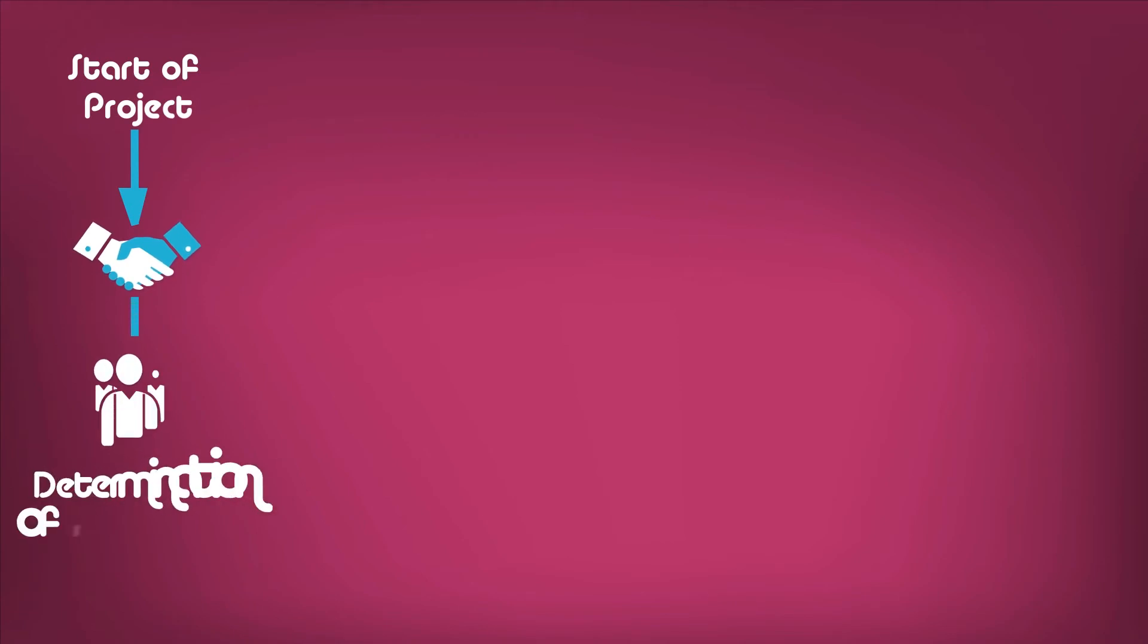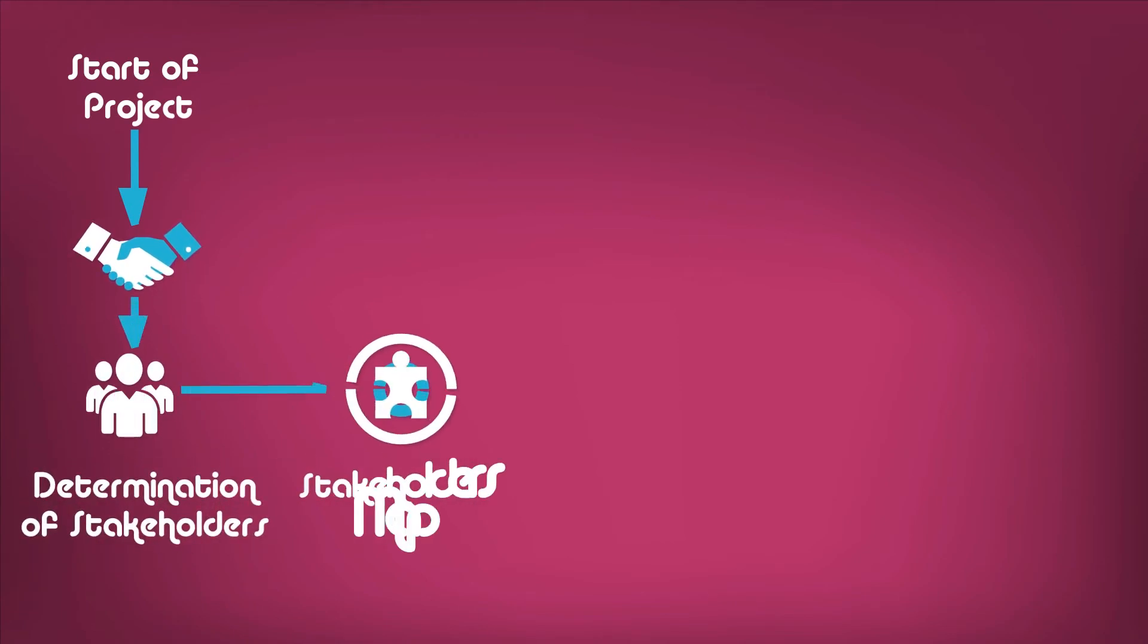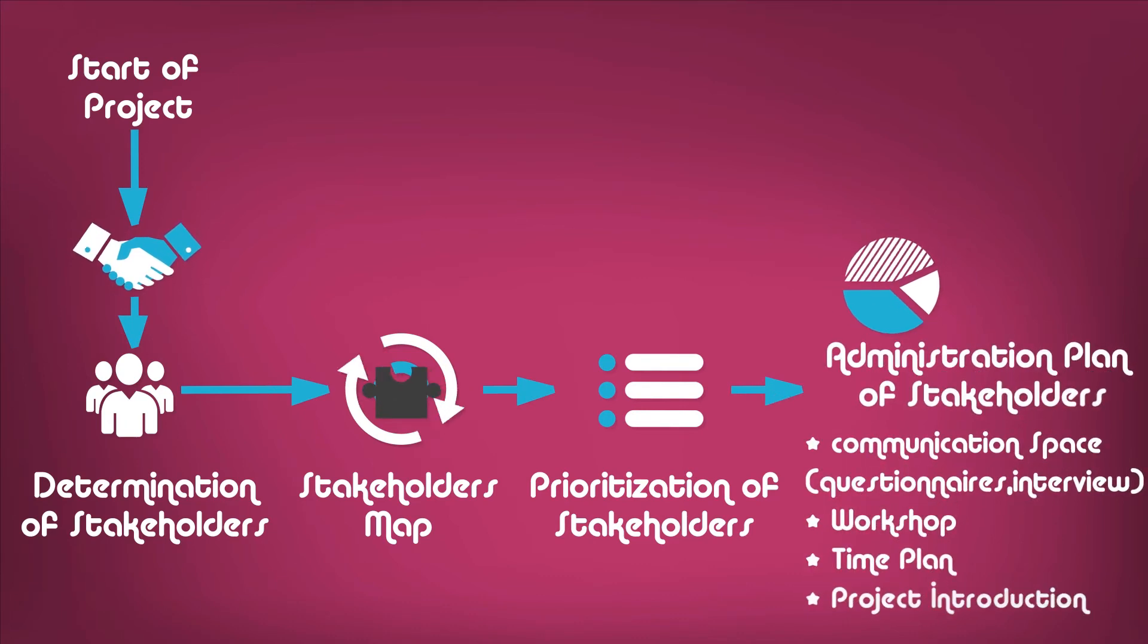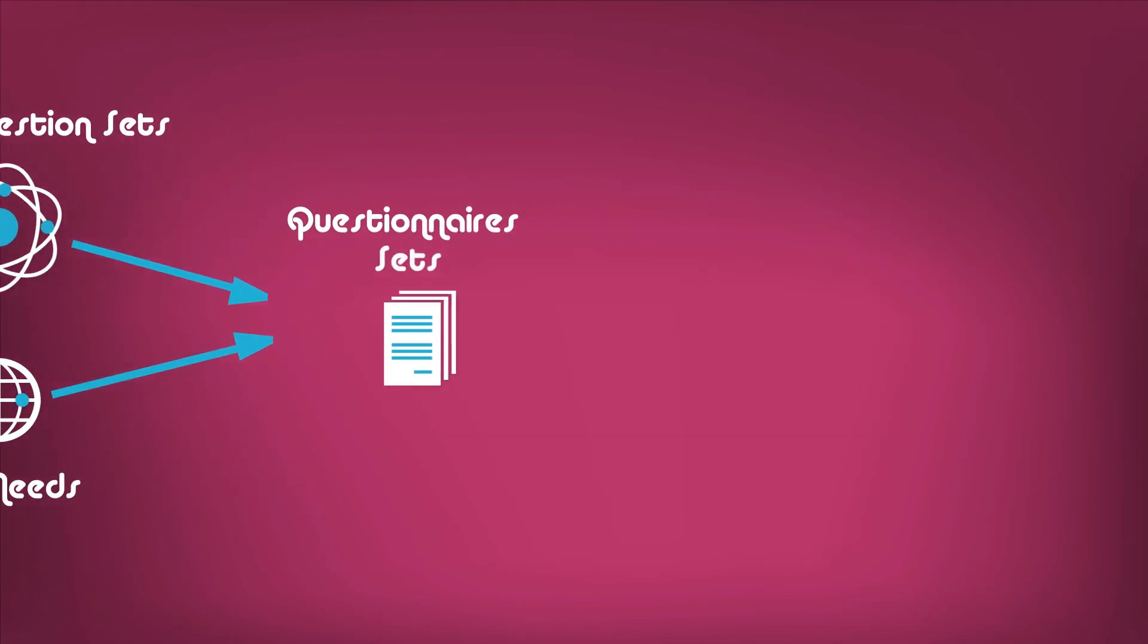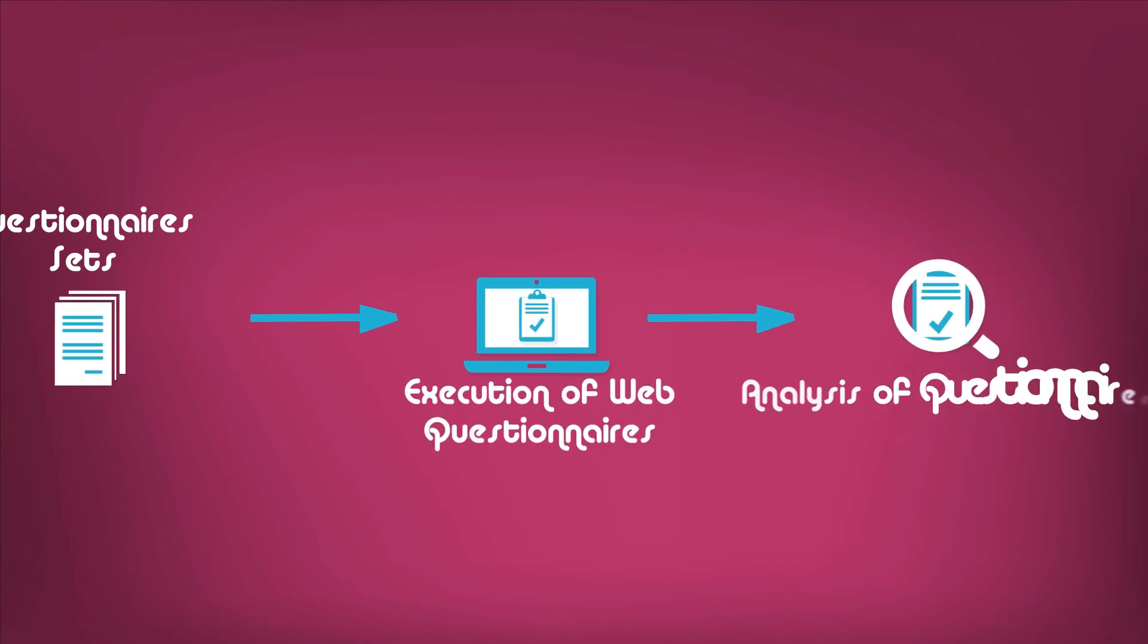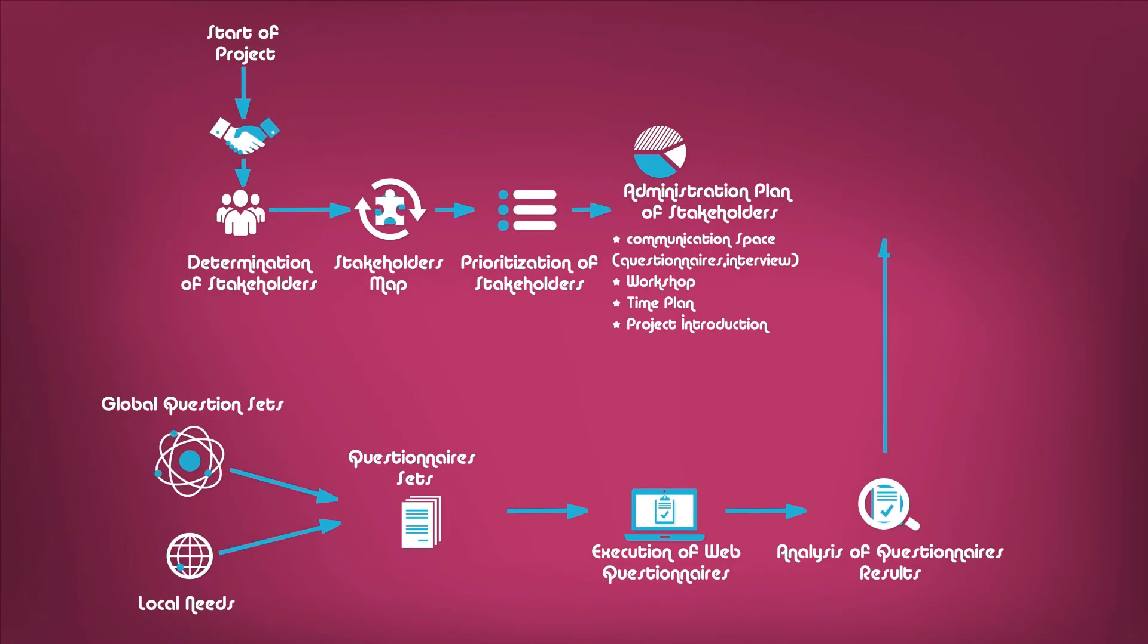First, the stakeholders to be worked with for a smart city journey have been identified. Stakeholder map is created and prioritized. Administration plan of stakeholders is created. Global question sets and local needs converted into surveys and questionnaires. Web questionnaires are executed. Results are analyzed. Interview and workshop attendee lists are created based on stakeholders' administration plan.